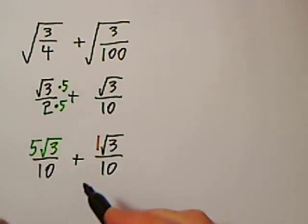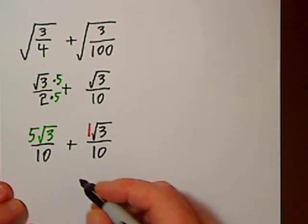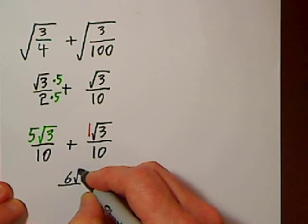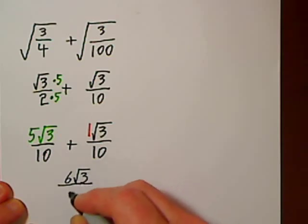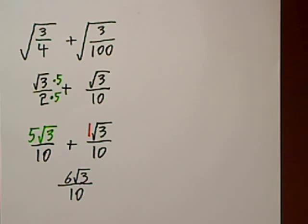So when we add these, we get—I have to back out a little bit—6, oops I forgot square root of 3 over 10, and then this can reduce by a factor of 2.